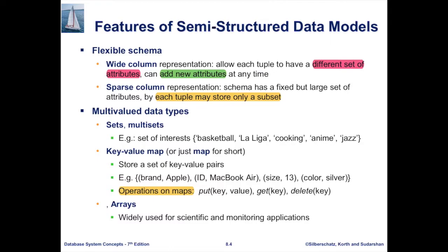For key-value mapping, there are several operations we could define — similar to a dictionary, where you put a key with a specific value, you get the value by specifying the key using a get-key operation which returns the value, and you can also delete the key along with its corresponding value.